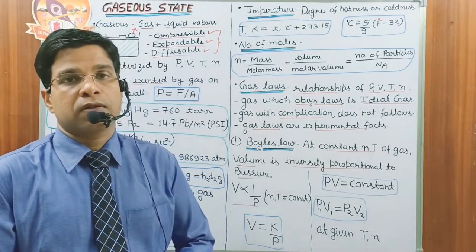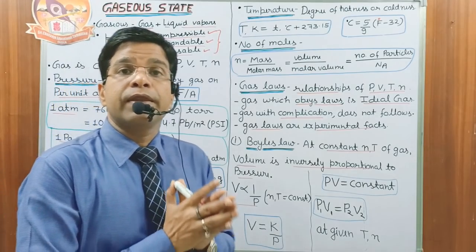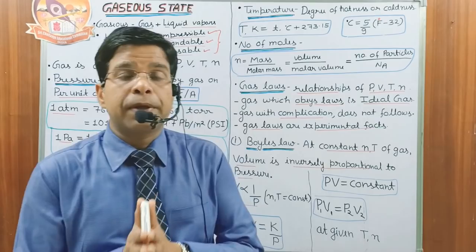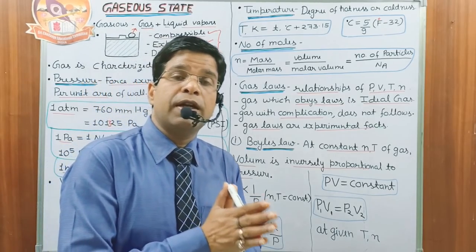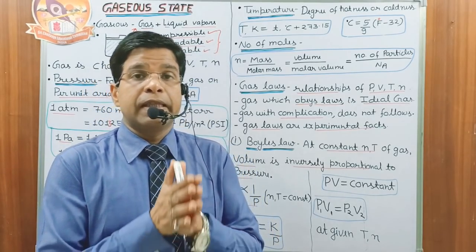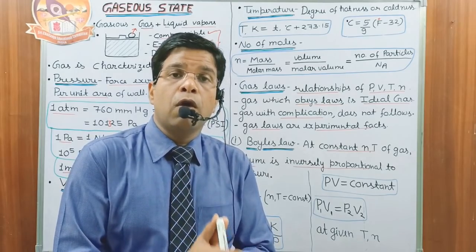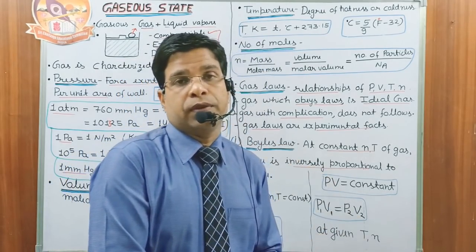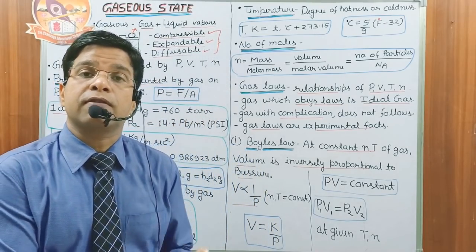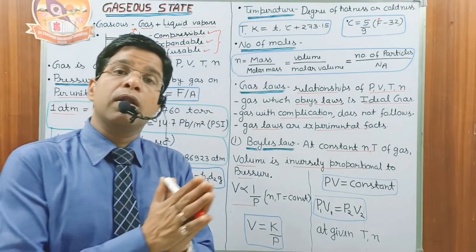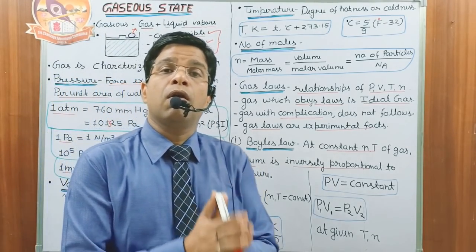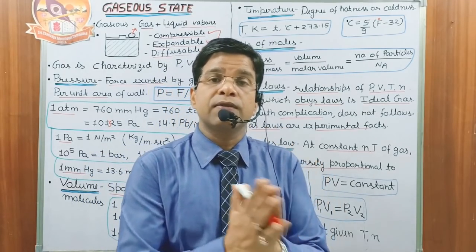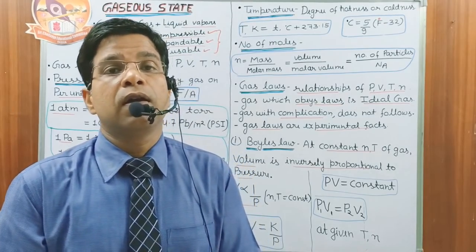Next we have the gas laws. Gas laws are the different relationships between pressure, volume, temperature, and number of moles. The gas which follows all these gas laws under all conditions is called the ideal gas. The gas which follows all the gas laws is called the ideal gas.